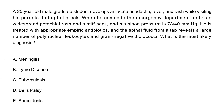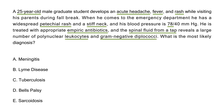Clinical vignette 1: A 25-year-old male graduate student develops acute headache, fever, and rash while visiting his parents during fall break. In the emergency department he has a widespread petechial rash and stiff neck, with blood pressure of 78. He is treated with empiric antibiotics and a spinal tap reveals a large number of polynuclear leukocytes and gram-negative diplococci. This is a classic vignette describing a patient with meningitis.